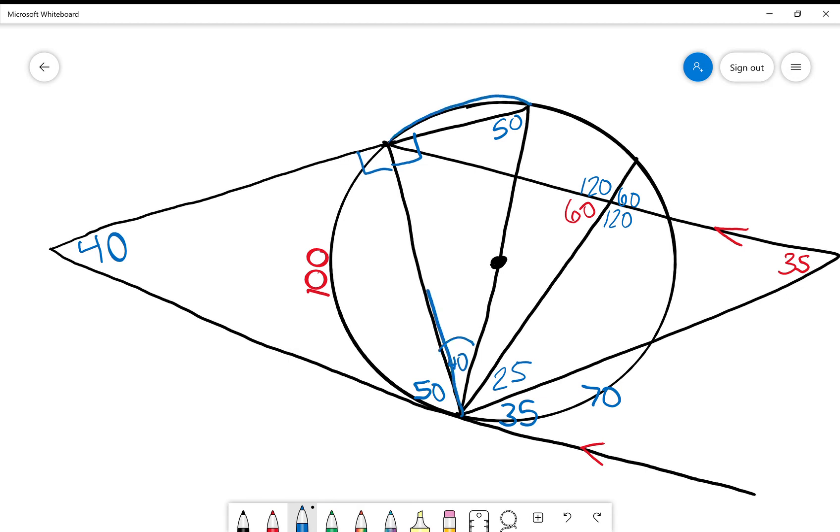Right. If that's an on angle, my intercepted arc over here—we gotta be able to see through all this craziness—that angle hits right there and there. That right there is intercepting that arc, so I would double it because the on angle is half the arc, or I can double the angle to get my arc of 80 degrees.